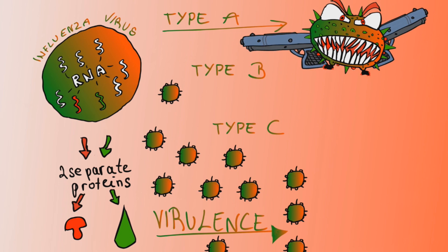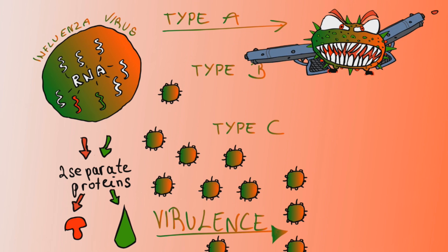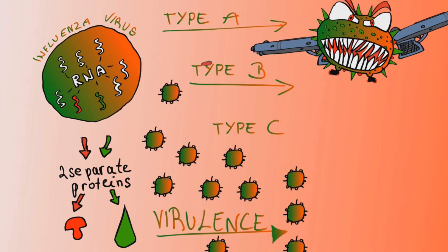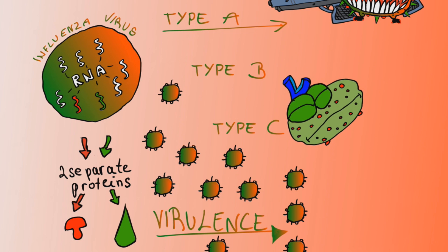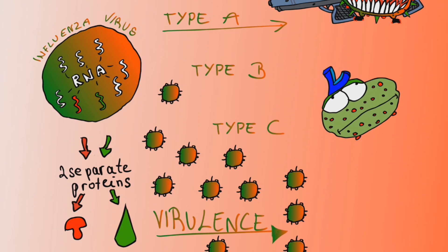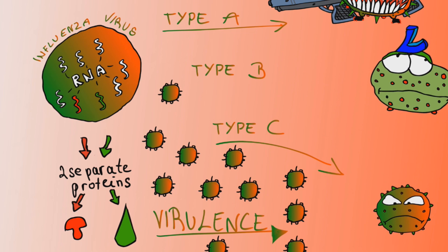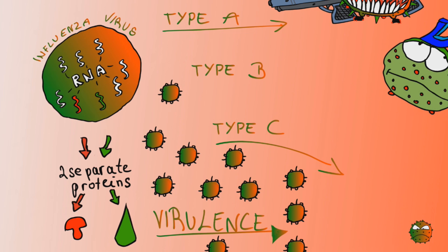The reason why type A is usually the most problematic is because of genetic shift and genetic drift, which we'll talk about in a future video. Type B is kind of the loser of the influenza viruses. It mutates slow and has very little genetic diversity, which allows humans to do fairly well against it. Type C can be kind of deadly, but usually doesn't cause that many problems and causes no worldwide pandemics.